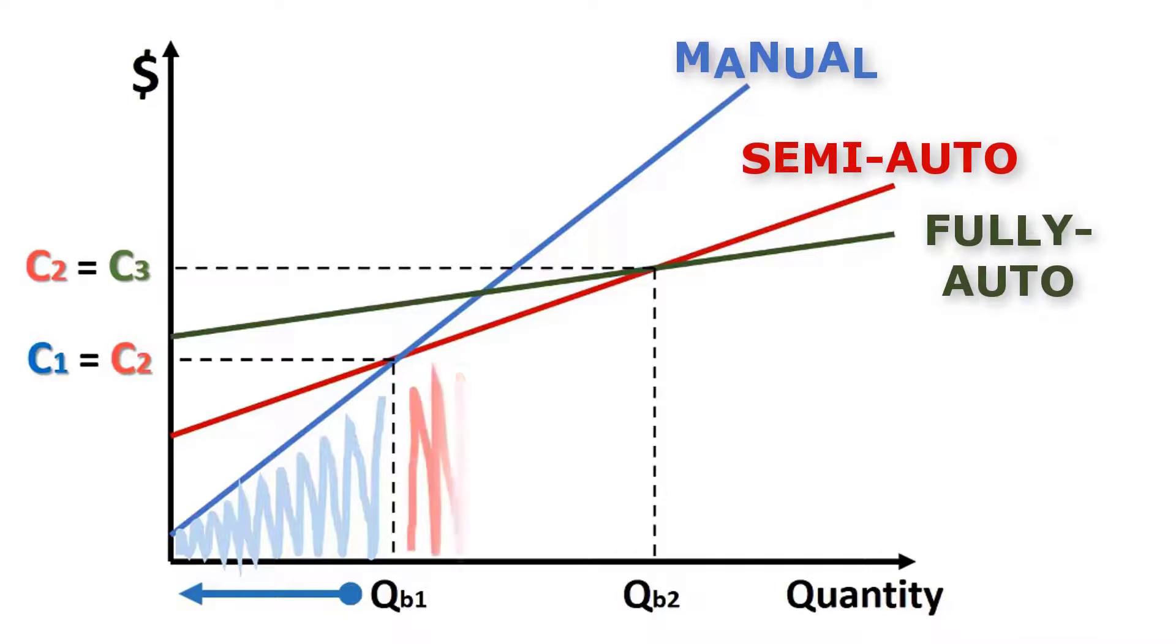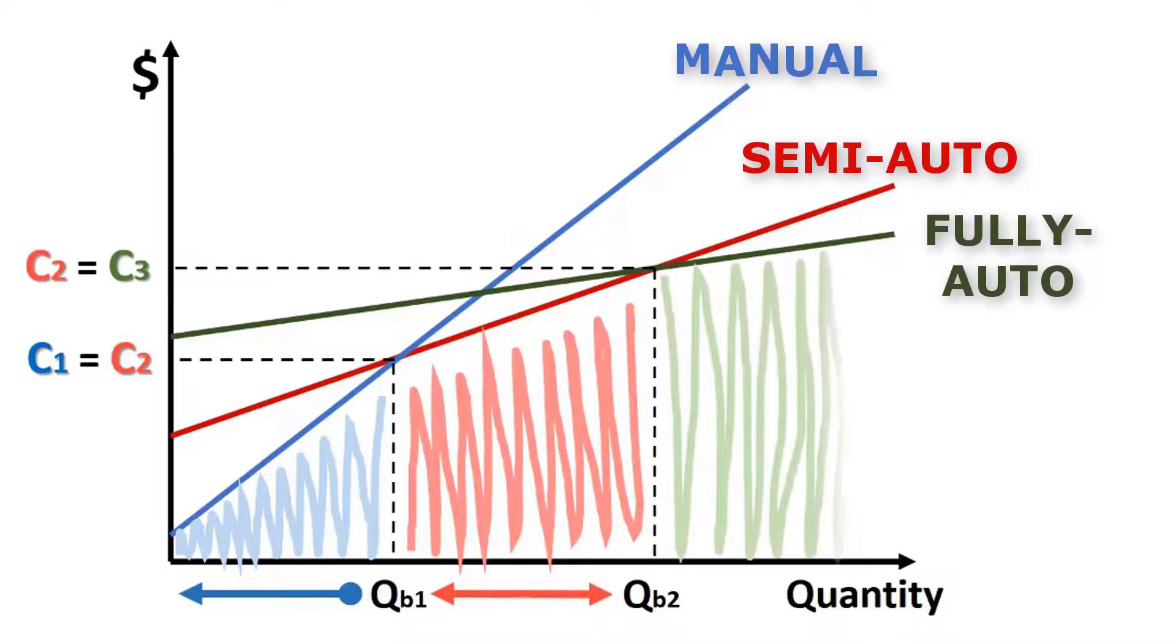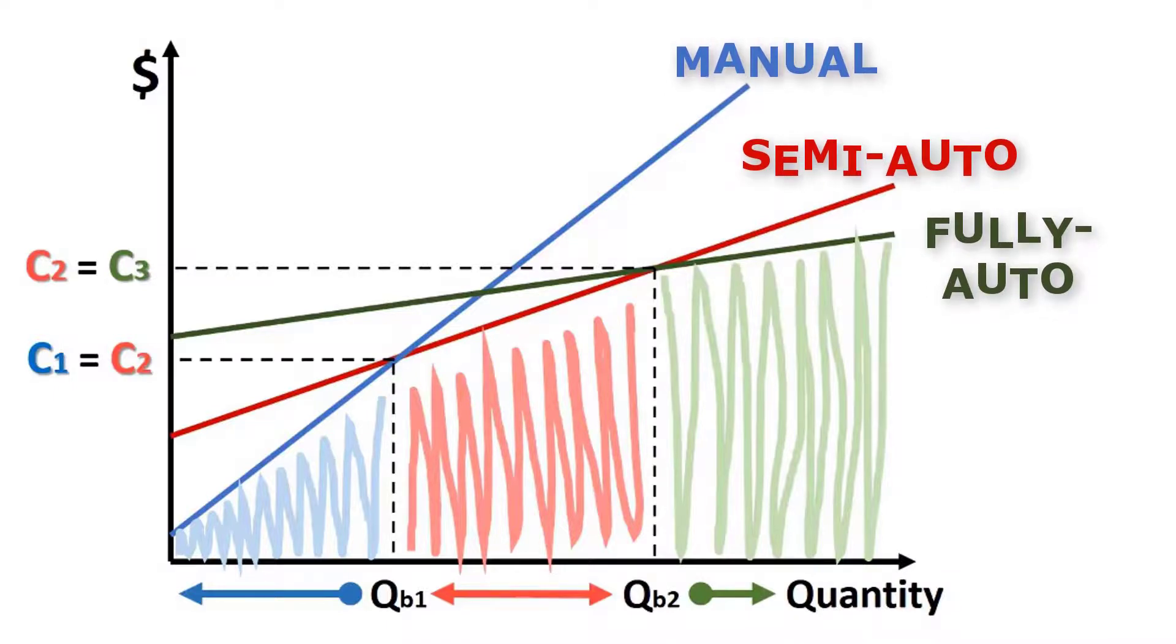The semi-automated alternative is very competitive when the demand is between quantities QB1 and QB2. Above the break-even quantity QB2, the fully automated alternative has the best cost performance.